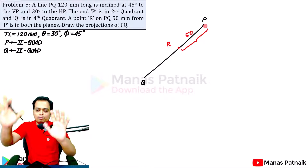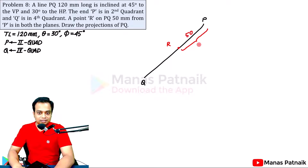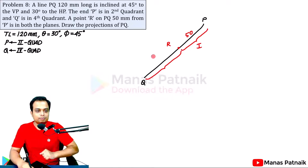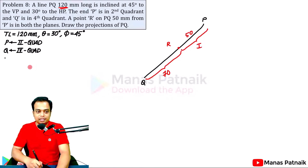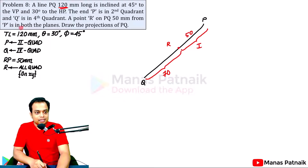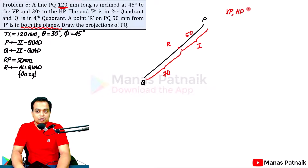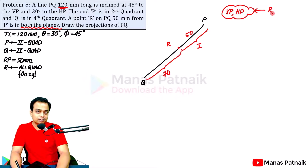You can think of this problem as the line having two segments: segment one is RP (50 mm) and segment two is RQ (70 mm), which together give 120 millimeters as the true length. Reading further, we are informed that point R is in both planes — the vertical plane and the horizontal plane. So point R has been placed such that it lies on both VP and HP simultaneously.